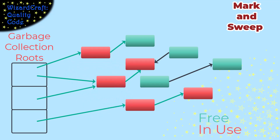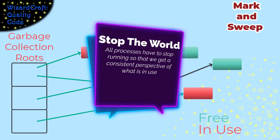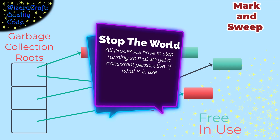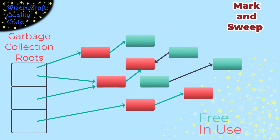If someone is allocating or freeing memory while we're in the middle of chasing all those pointers, we won't get a consistent picture of what is free and what is allocated. So we have to do what's called stop-the-world — the whole system has to pause while we're doing this marking. The length of that pause is proportional to how many things are allocated in the system, because we have to touch each thing either to mark it as used or eventually to free it.